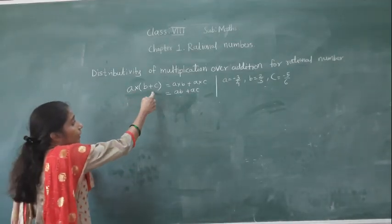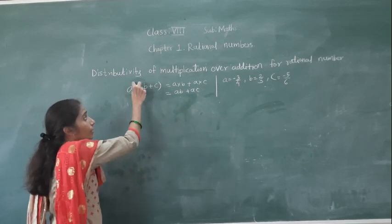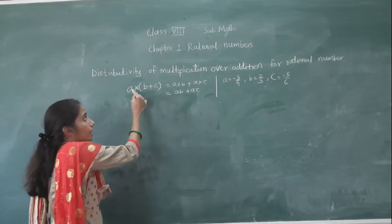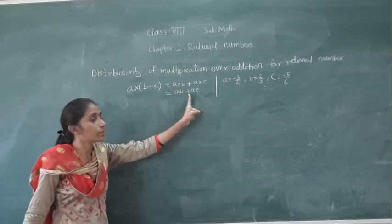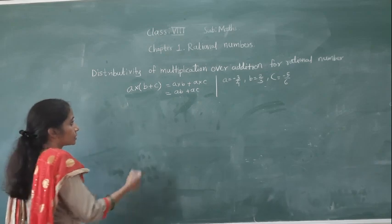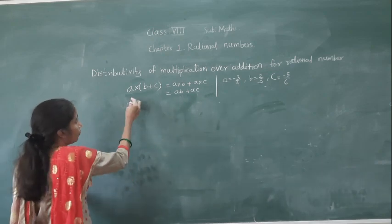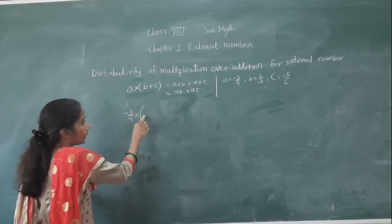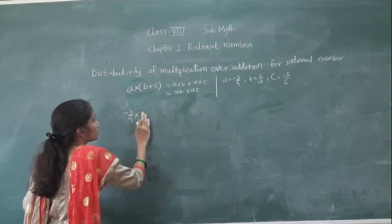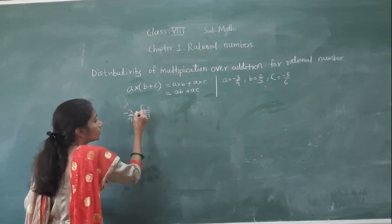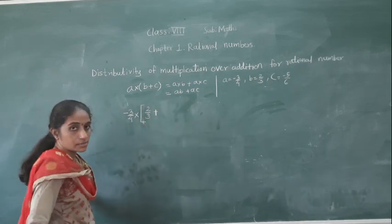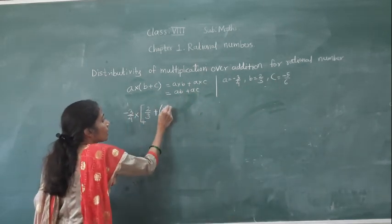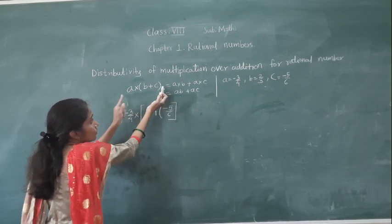We will see this: a into bracket b plus c. A distributes into the bracket, so a into b plus a into c. Now a value is minus 3 upon 4, so I will place minus 3 upon 4 into bracket. B value is 2 upon 3, plus C value is minus 5 upon 6. First we will solve this bracket.